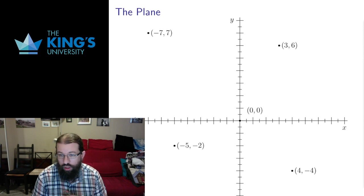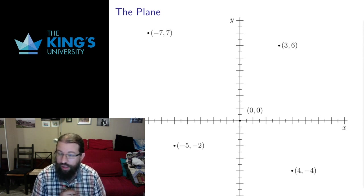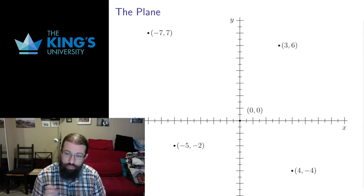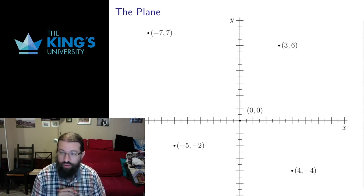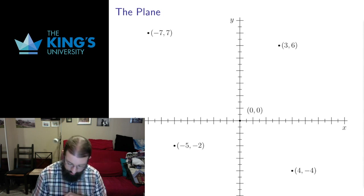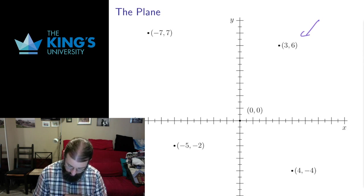So a point in the Cartesian plane is identified by a pair of numbers. The first pair is its position in the x-axis. The second pair is its position in the y-axis. So if I look at this point, 3, 6.